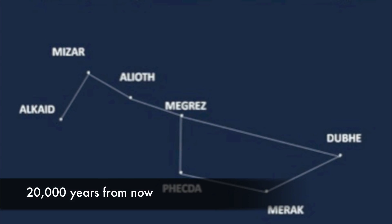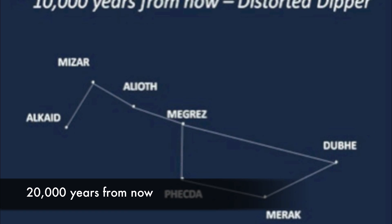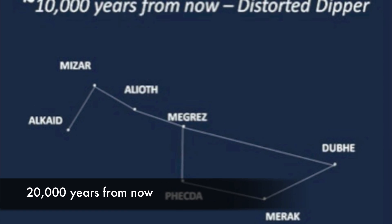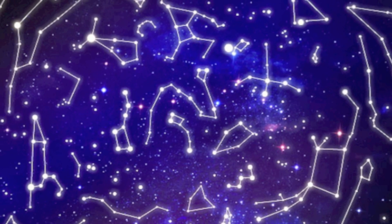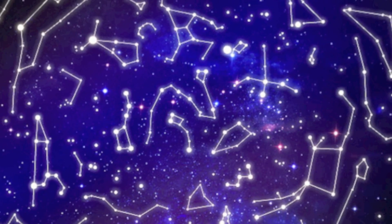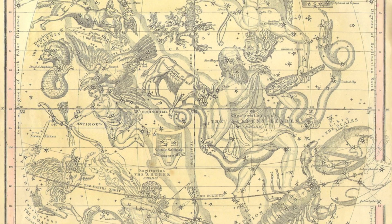For this reason, and more, it's much easier and useful to define constellations today as sections of the sky in which a star or an object always has a home.